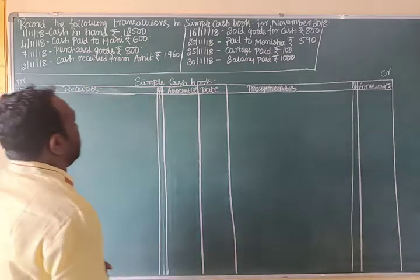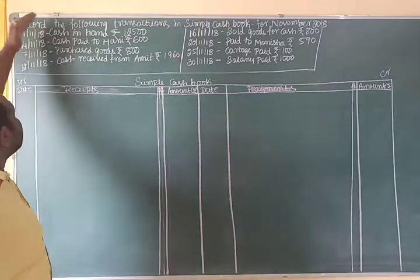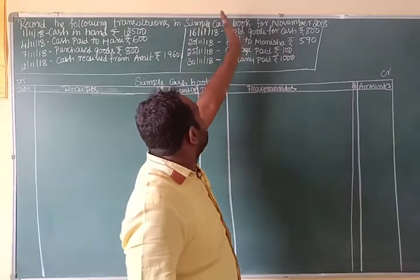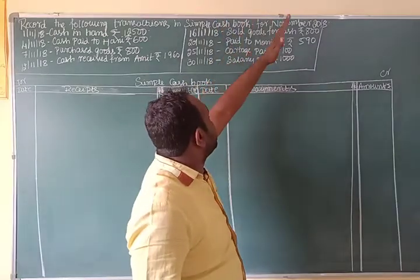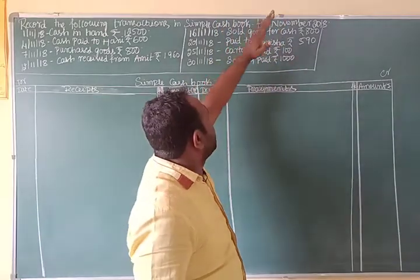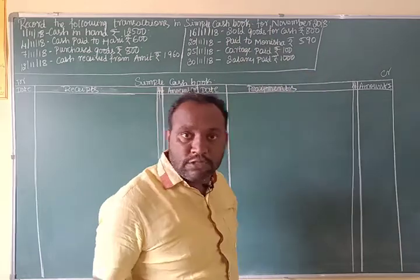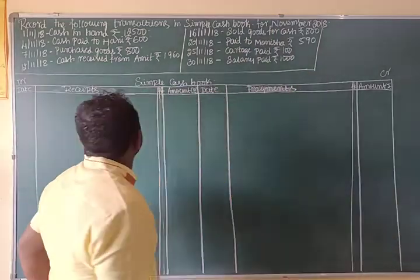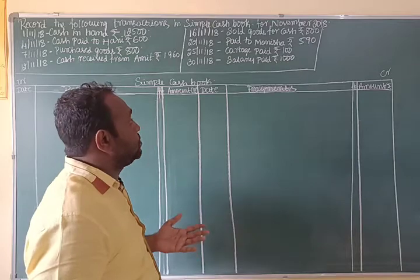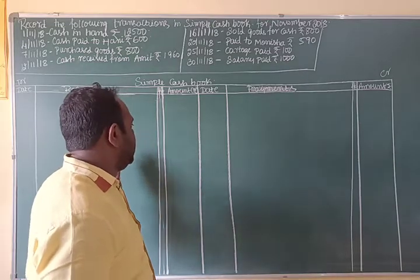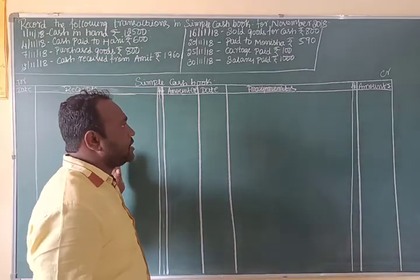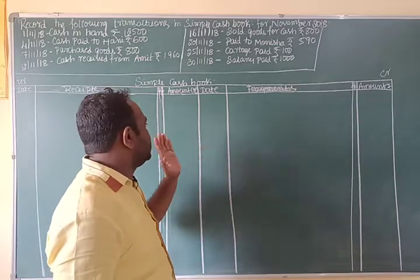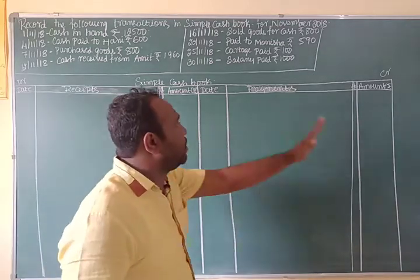They have given a problem: record the following transactions in the simple cash book for November 2018. A simple cash book contains only one amount column on each side — debit side and credit side.